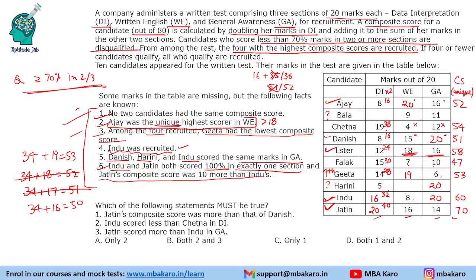We were able to fill 7 missing values in the table. Now for the questions. Question 1: Which statements must be true? Statement 1 — Jatin's composite score was more than Danish's: true. Statement 2 — Indu scored less than Chetna in DI: Indu scored 16, Chetna scored 19, so true. Statement 3 — Jatin scored more than Indu in GA: after solving, Jatin scored less than Indu in GA, so this is false. Statements 1 and 2 are both true.